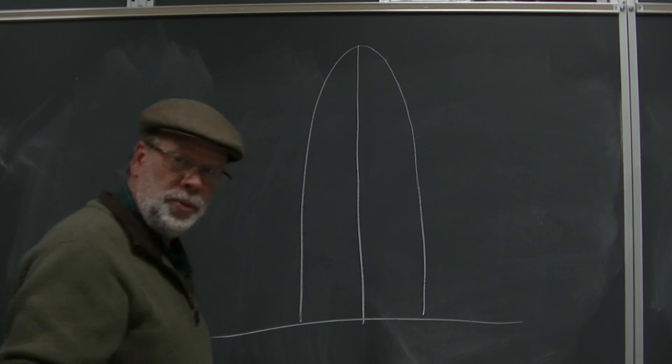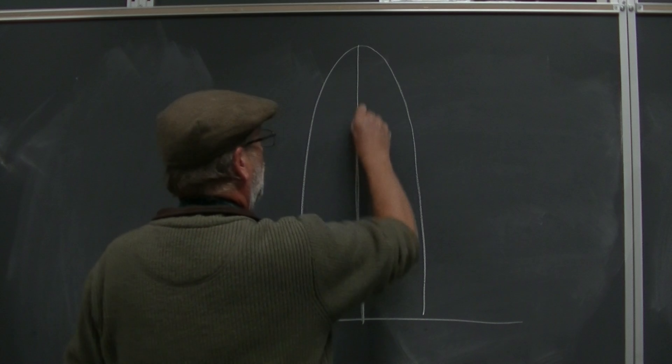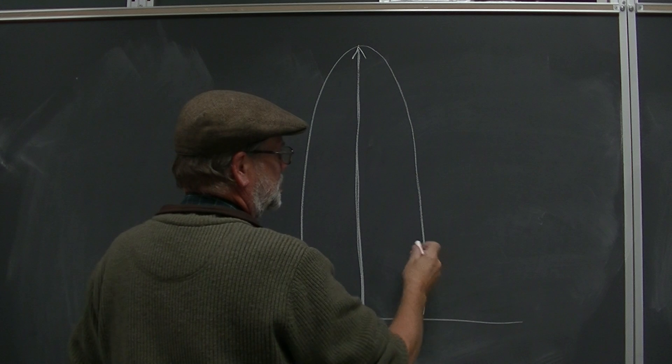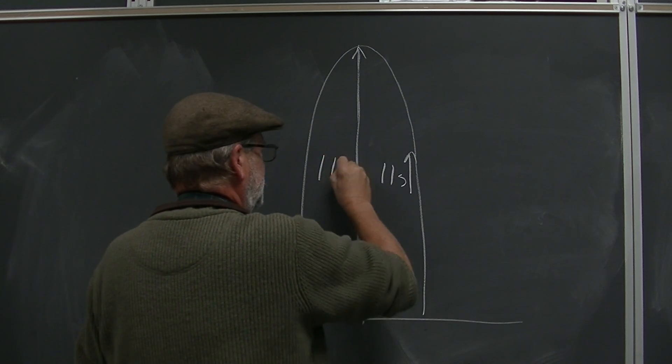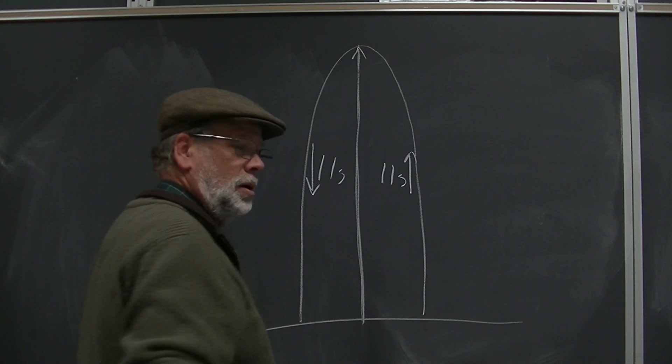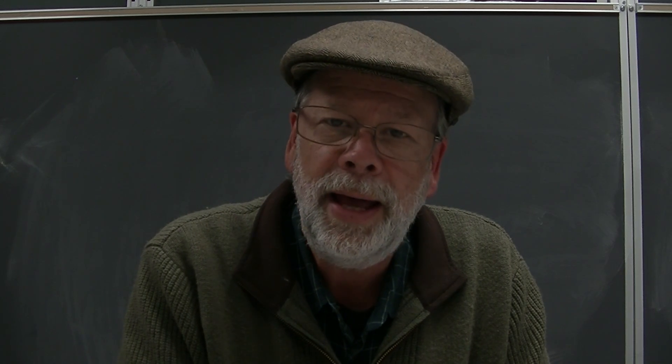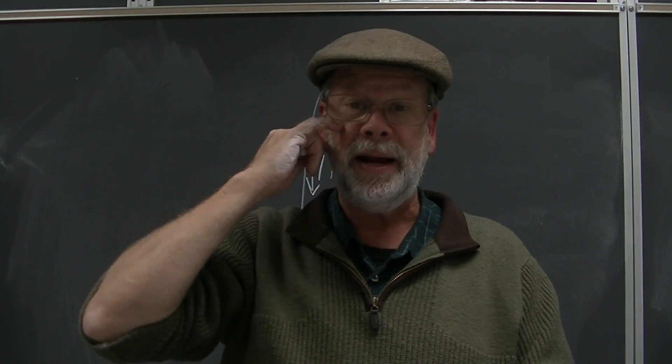A wonderful thing about projectiles is that it's symmetric. All the time to get all the way up to the top and then all the way back down took a total of 22 seconds. That means it's 11 seconds on the way up, 11 seconds on the way down. Do you see how to do it now? It's an 11-second drop problem.